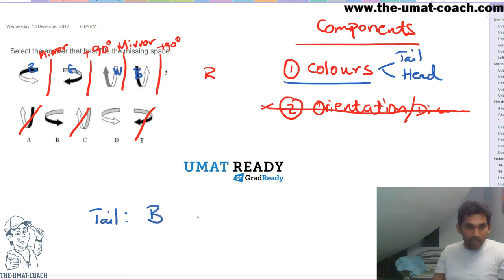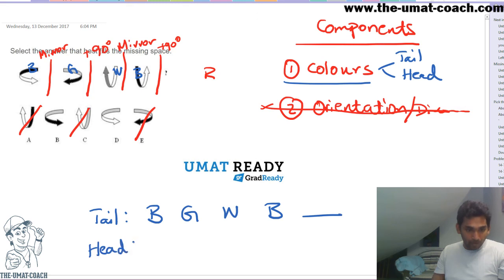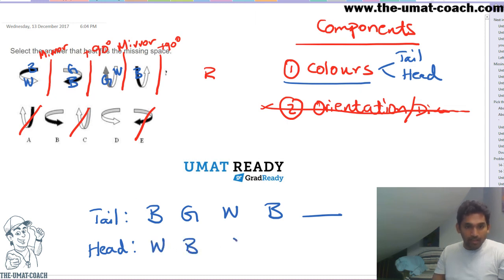So black, gray, white, black — and then what's the final answer going to be? And the head one is white, black, gray. So white, black, gray, and then white again.